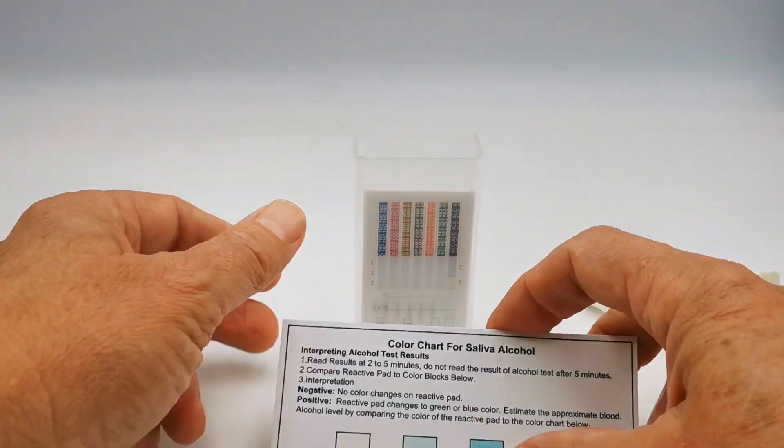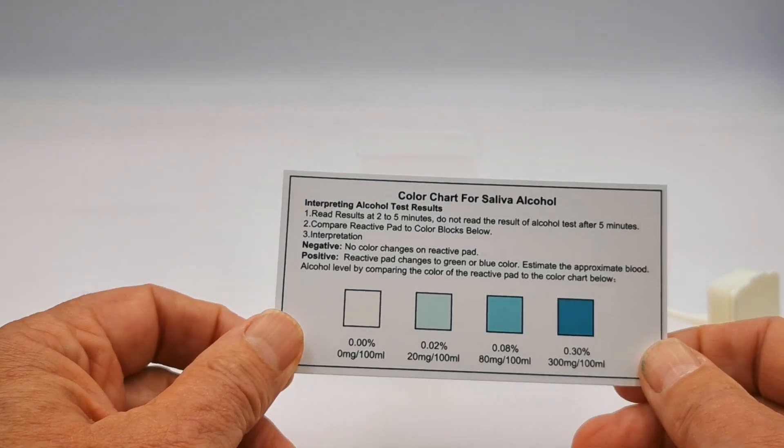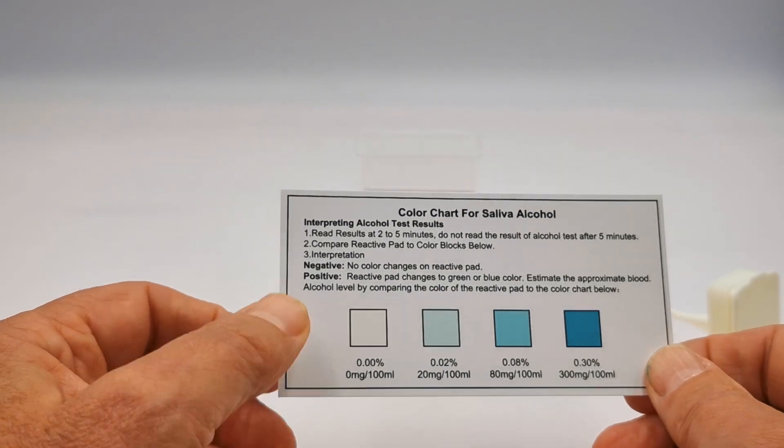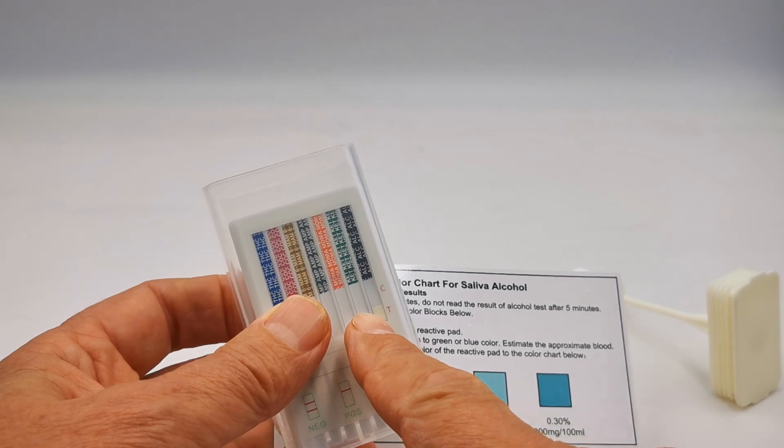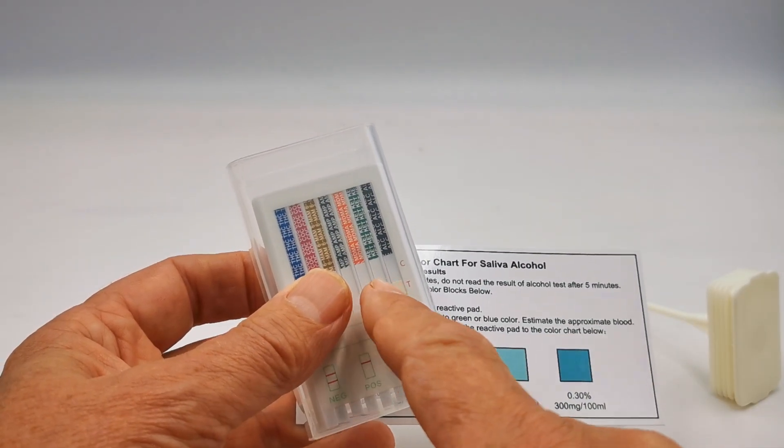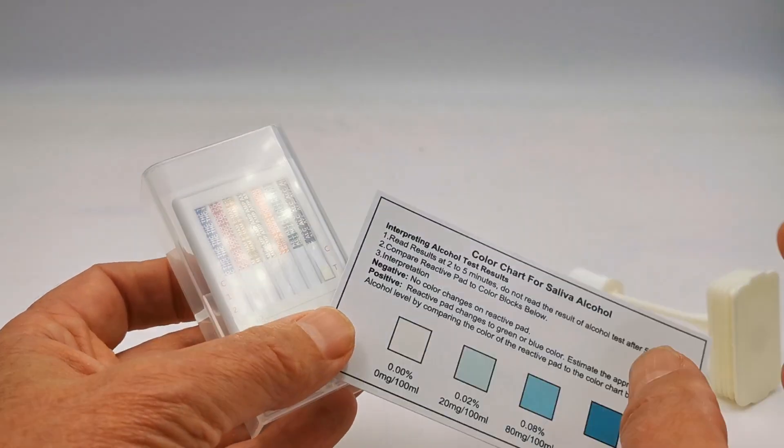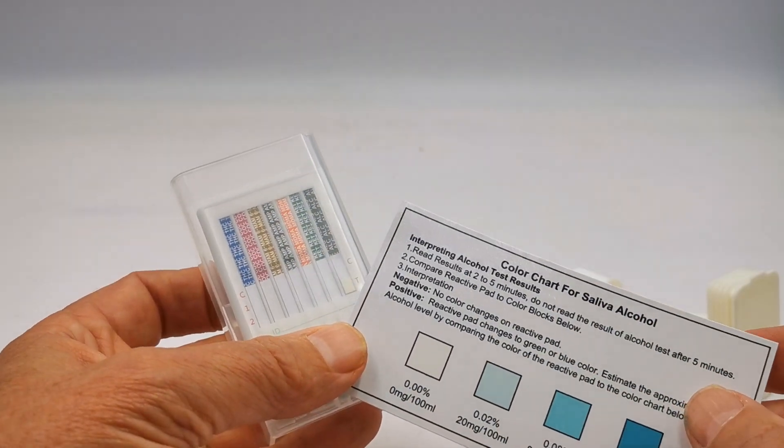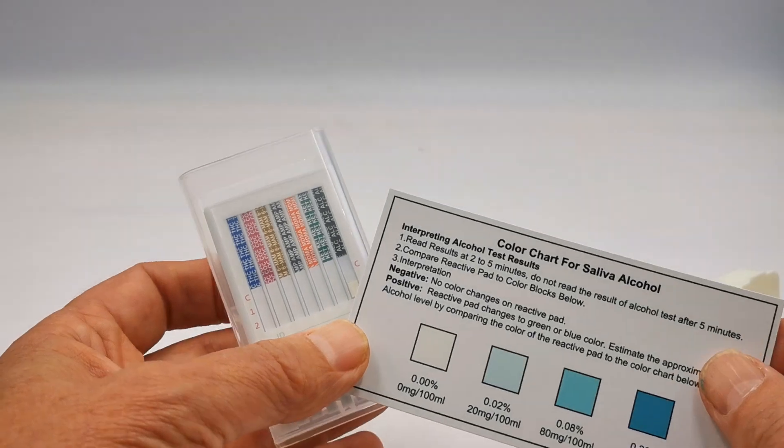Also supplied with your test will be a color chart for the saliva alcohol interpretation. This is on this pad here on the right hand aspect of the columns as you look at the front of the test, a little white pad, and you'll see that corresponds with the negative coloration on the saliva interpretation charts.